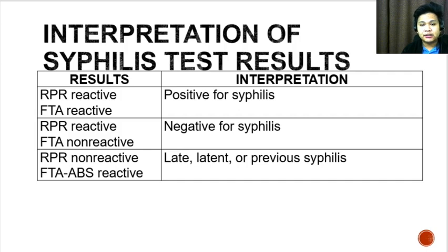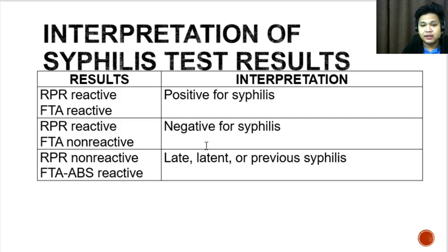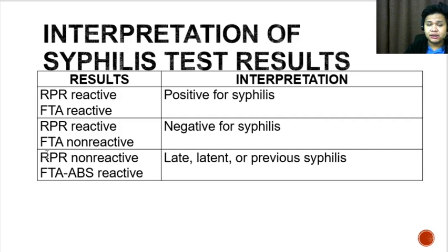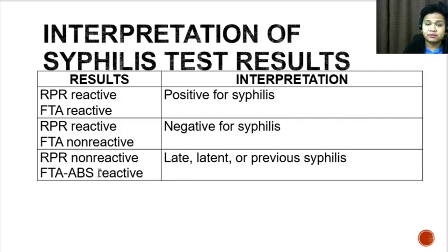For interpretation: if the RPR is reactive and the FTA-ABS is reactive, the patient is confirmed positive for syphilis. If the RPR is reactive but the FTA-ABS is non-reactive, this is considered negative and the reactive RPR is a false positive. If the RPR is non-reactive and the FTA-ABS is reactive, this could mean the patient has late, latent, or previous syphilis — the RPR eventually becomes non-reactive after treatment, while the FTA-ABS remains reactive since treponemal antibodies persist for life.